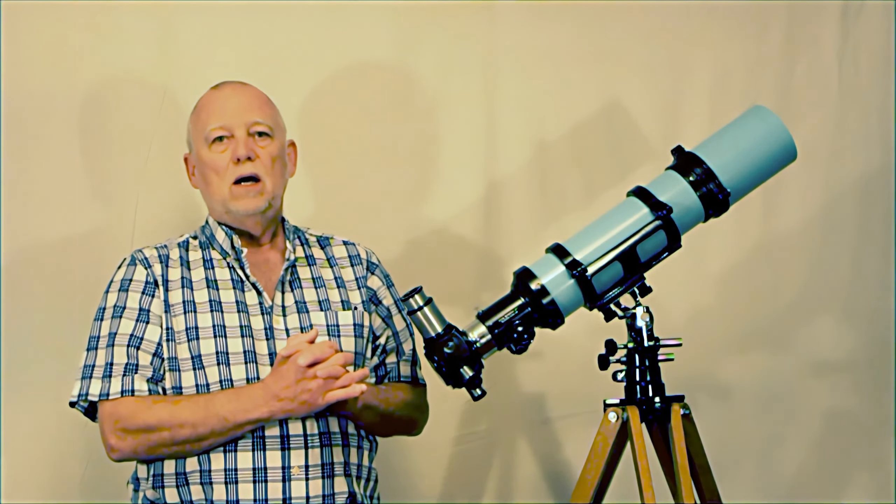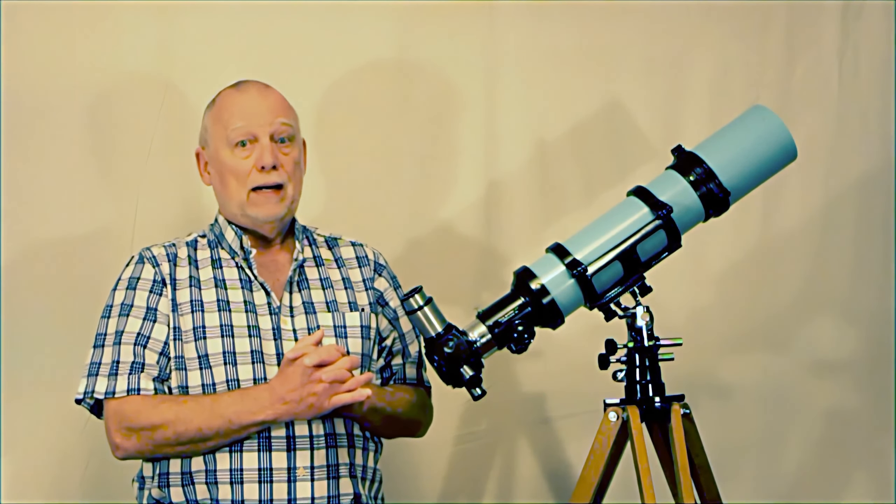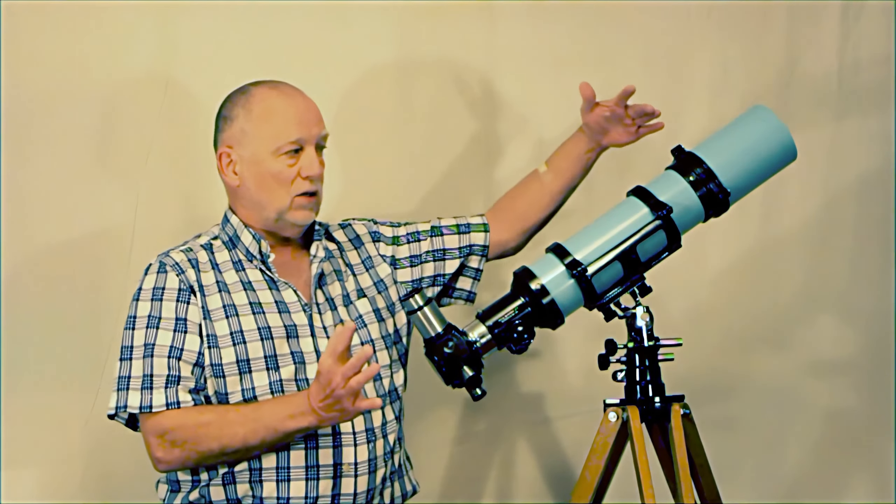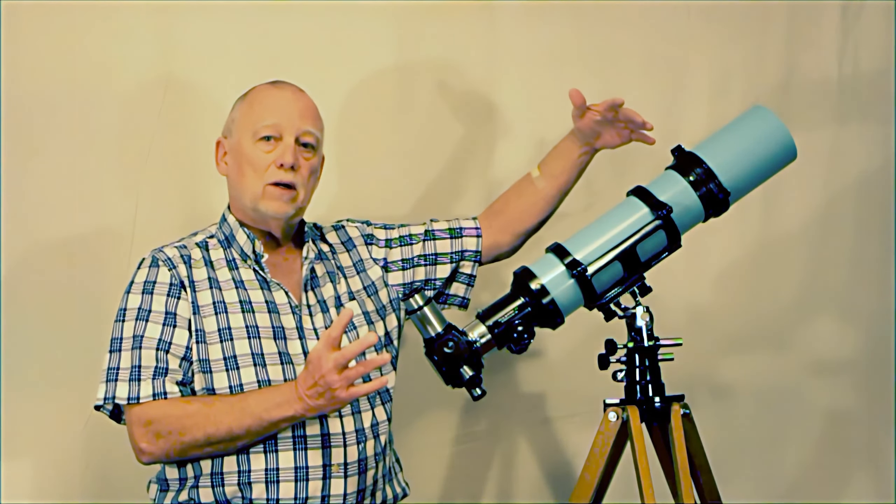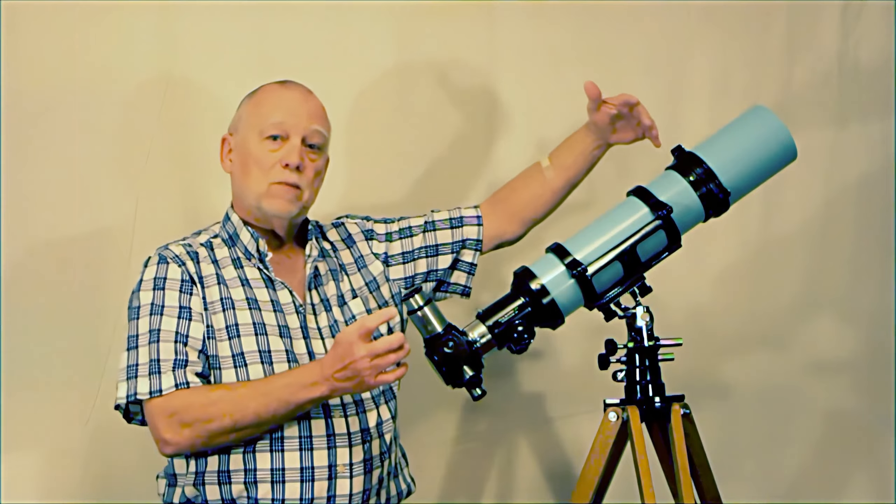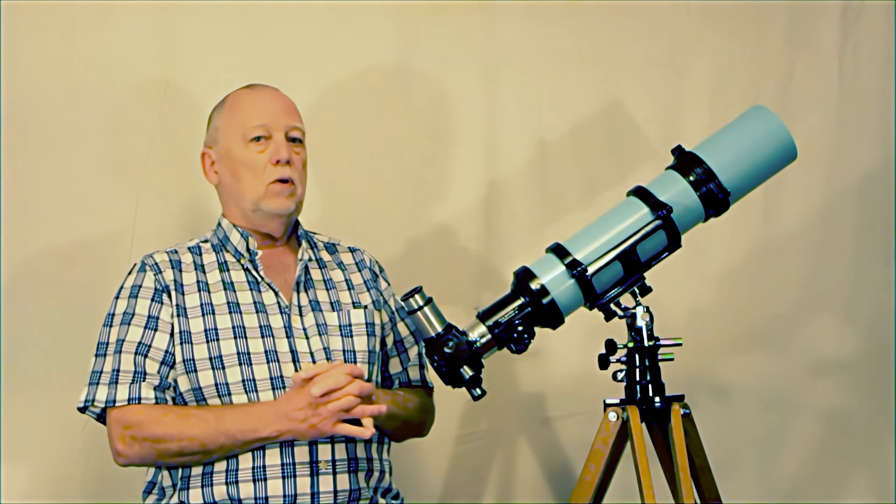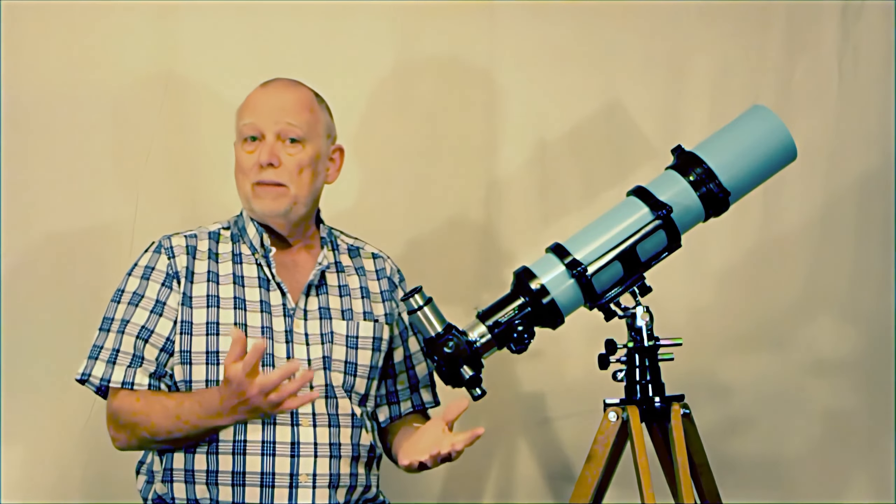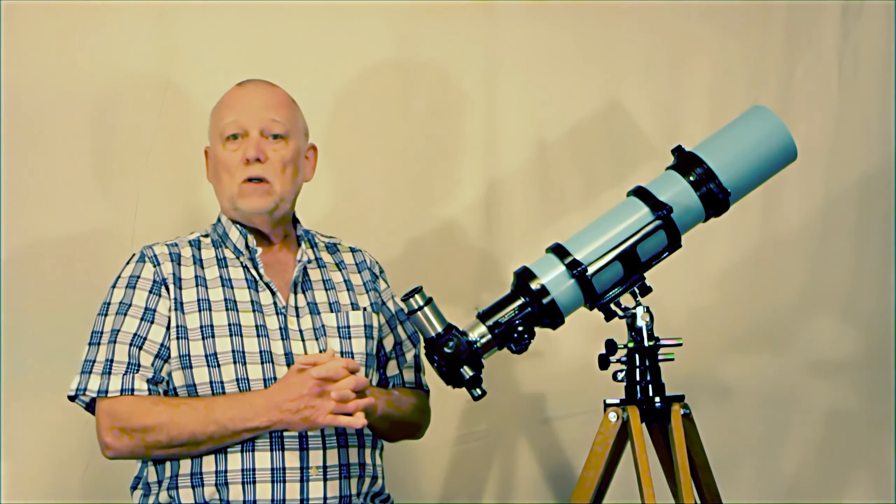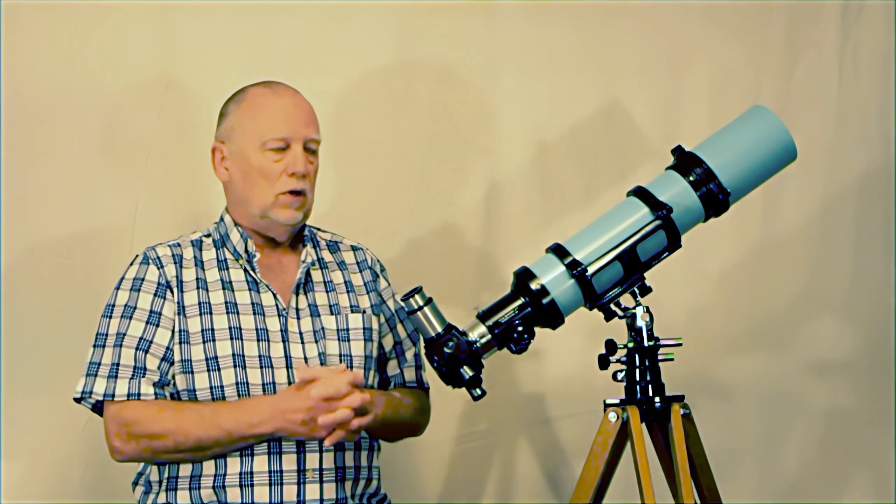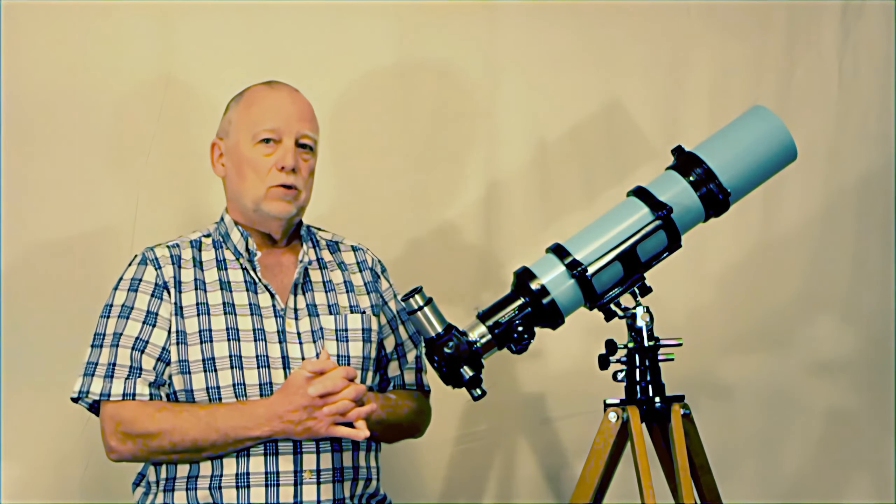They have some advantages, but the advantages of a smaller telescope like this. This is a 94 millimeter F7. Imagine something twice as long as this, how much more cumbersome that would be of course, and difficult to mount, difficult to store, etc. All the things that come with a larger size.